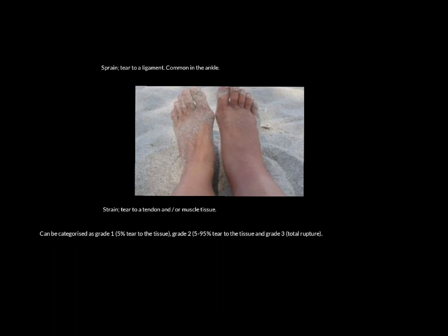Two injuries often confused with each other because they sound similar are sprains and strains. A sprain is a tear to a ligament — remember, ligaments hold bones to bones. An ankle sprain damages the ligament holding the fibula to the talus bone. Whereas a strain is where you've damaged the tendon and muscle tissues — tendons hold muscles to bones. The way to remember it: there's a T in 'strain' to remind you it's a tendon or muscle tissue injury.